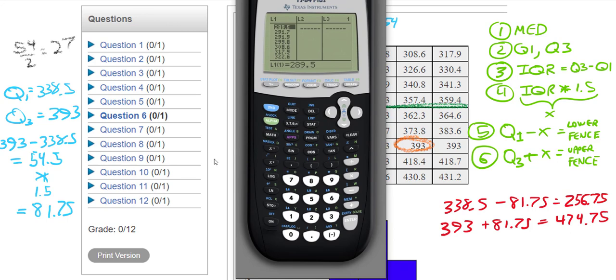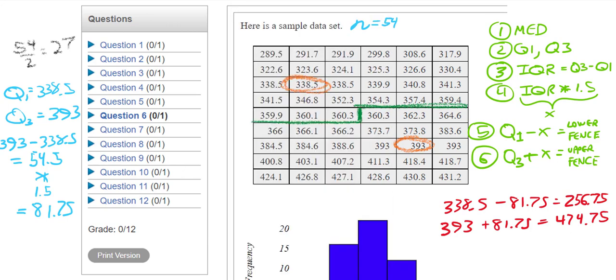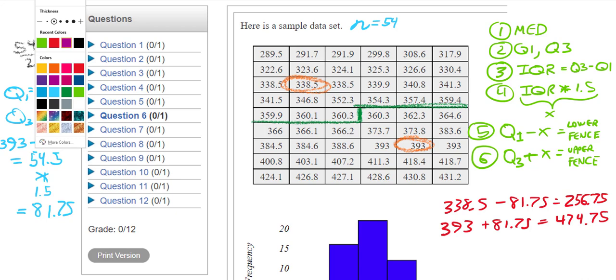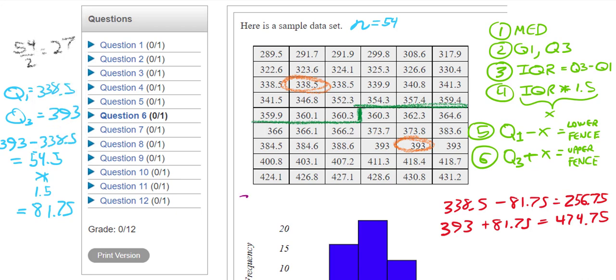So here is the calculator shortcut. The calculator shortcut is the following. If you hit the STAT key first, then move your arrow once to the right to the calculation key, and then press the one button. If you press the one button, it will take you to something called one variable stats. And that's what we want to do. We want to run some statistics on this one variable problem. And the variable is this sample data set.